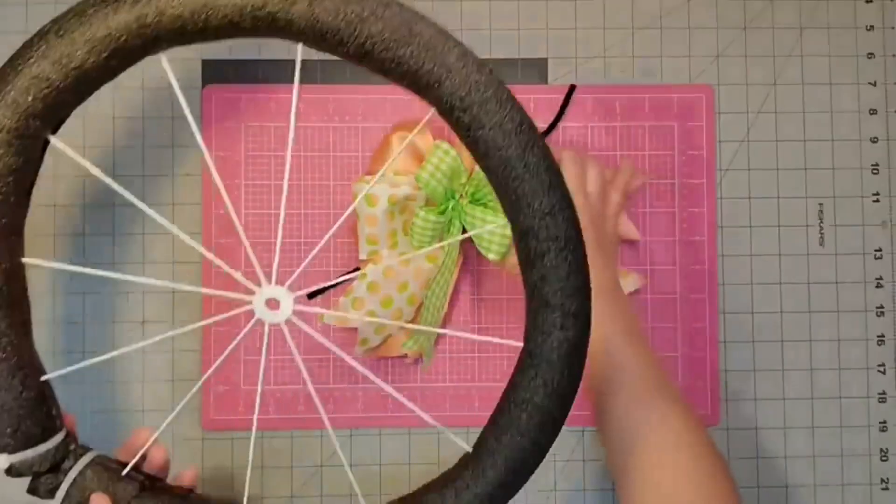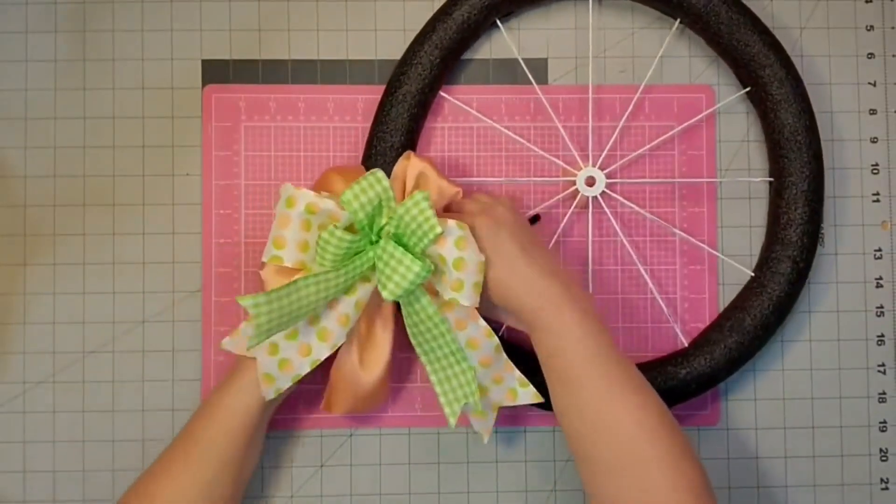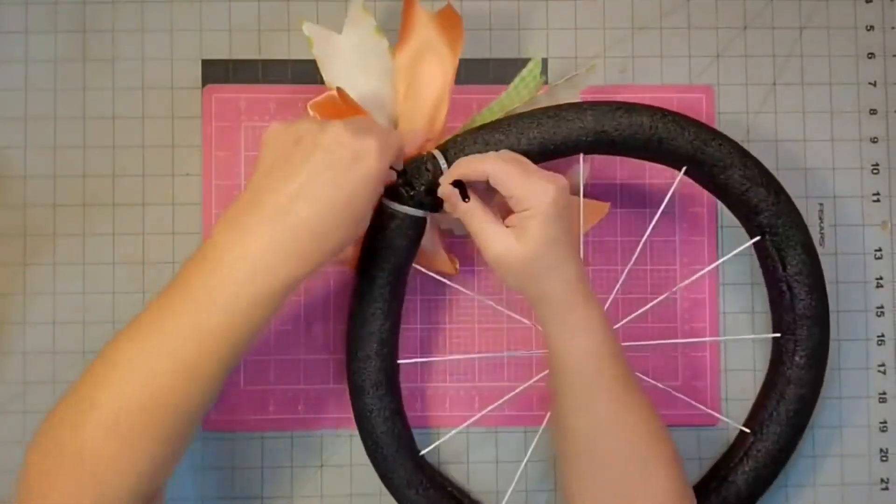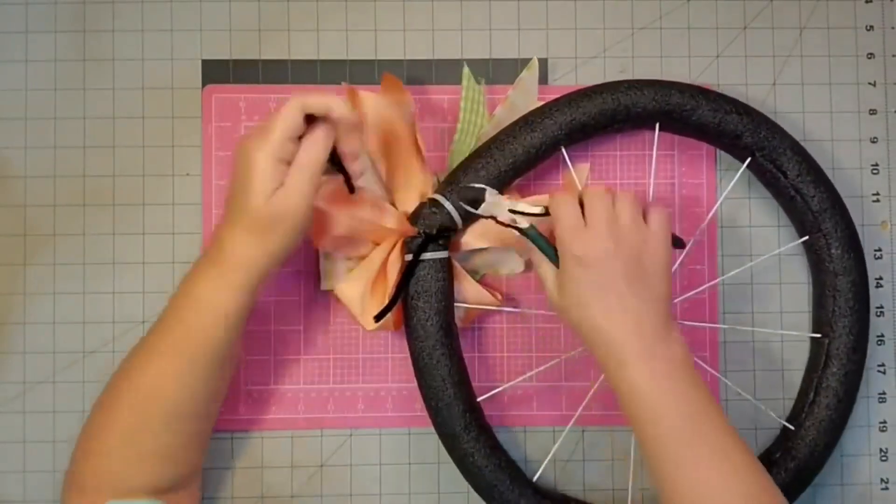Now it's time to attach it there to the wreath. I used a black chenille stem so I could hide it easily here on the back and I'm just going to give it several twists, cut off the excess and then I'll just poke the excess down into that back wheel.